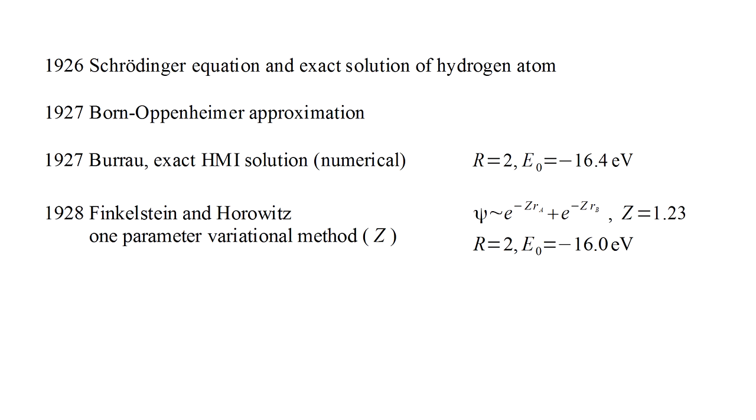The hydrogen molecule ion is the only molecule for which the Schrödinger equation can be solved exactly. On the other hand, the variational method is applicable to any molecule. Seeing how closely this approximate method can reproduce the exact result forms a very important test case.